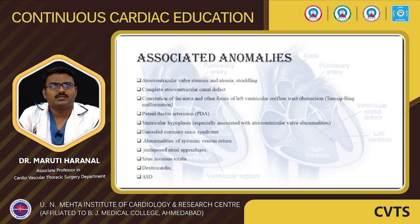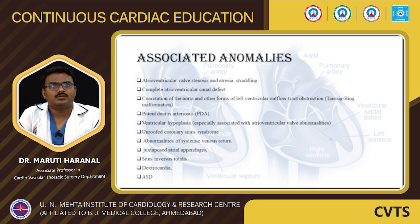Associated lesions include: atrioventricular valve stenosis and atresia, straddling, complete atrioventricular canal defect, coarctation of the aorta and other forms of left ventricular outflow tract obstruction (more commonly seen with the Taussig-Bing anomaly), patent ductus arteriosus, ventricular hypoplasia, unroofed coronary sinus, abnormalities of the systemic venous return, juxtaposition of atrial appendages, situs inversus totalis, dextrocardia, and ASD.